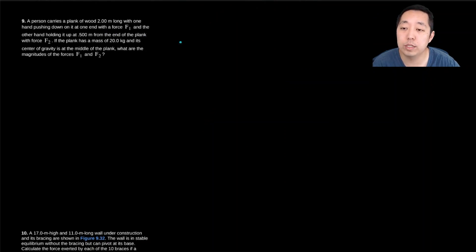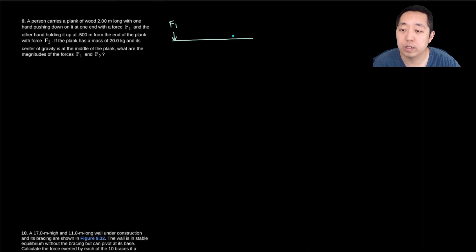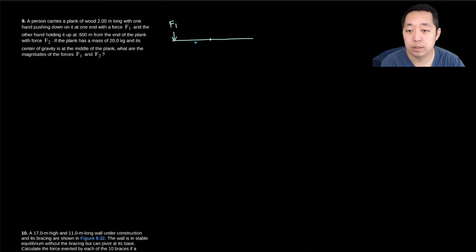Next problem: a person carries a 2-meter plank of wood with one hand pushing down at one end with force F1, and the other hand holding it up at 0.5 meters from the end with force F2. We have the plank drawn here — F1 pushes down at one end, F2 pushes up at 0.5 meters from the other end.